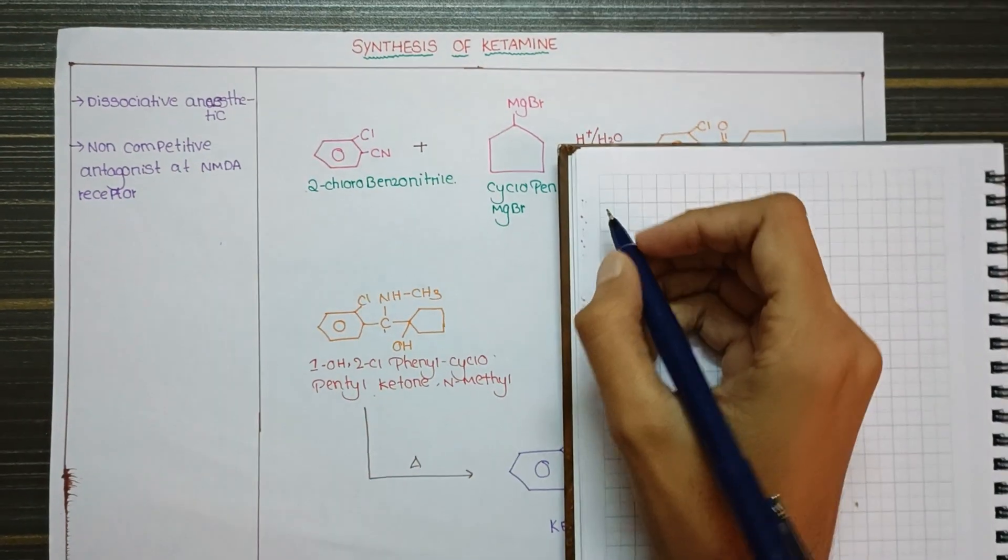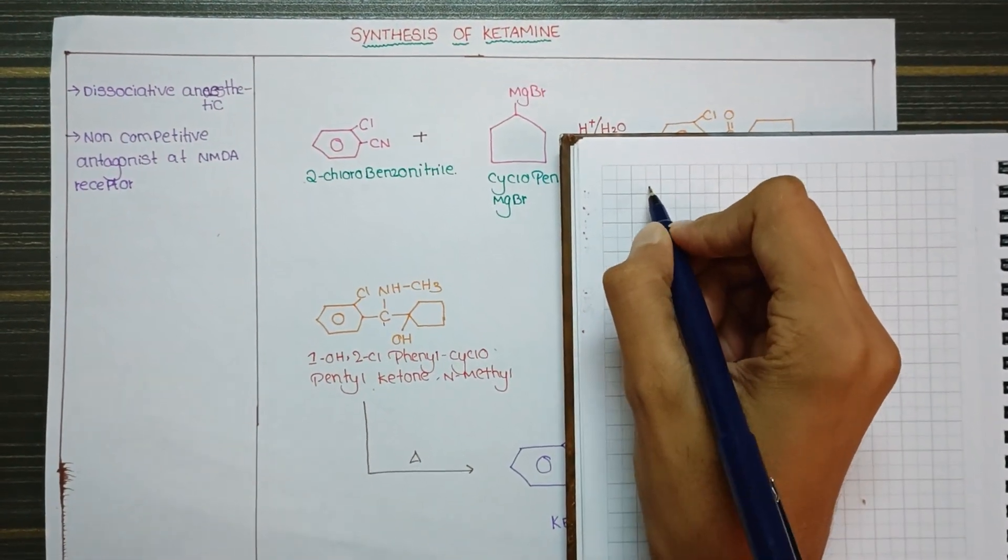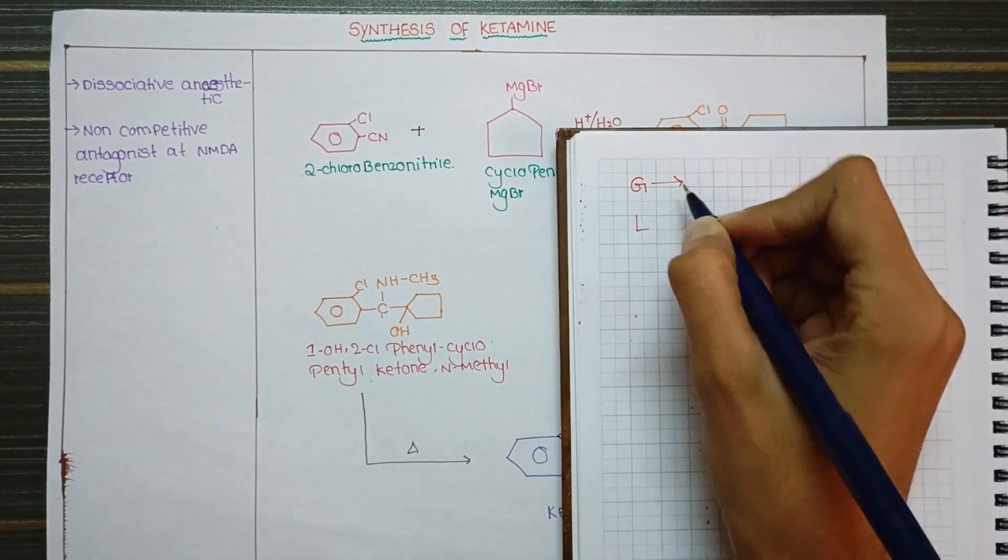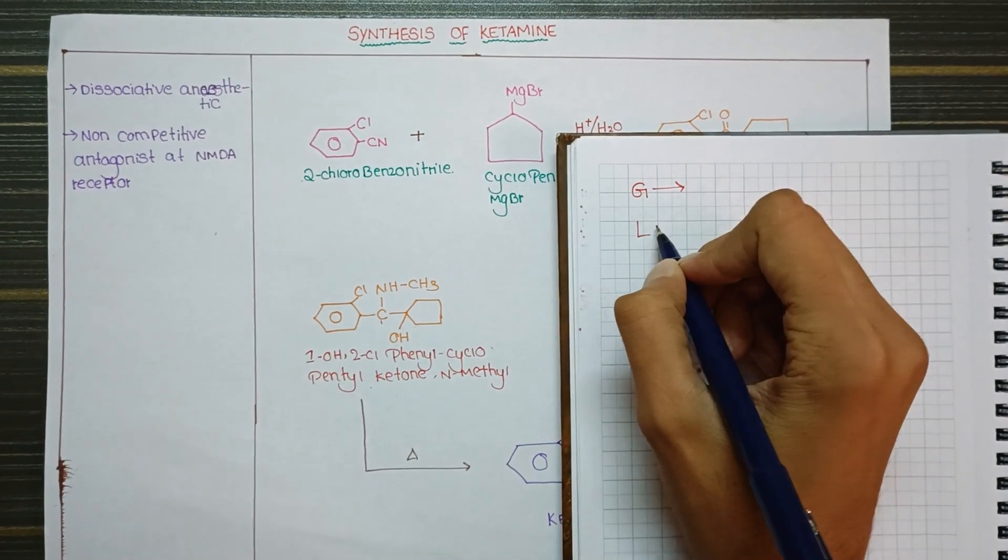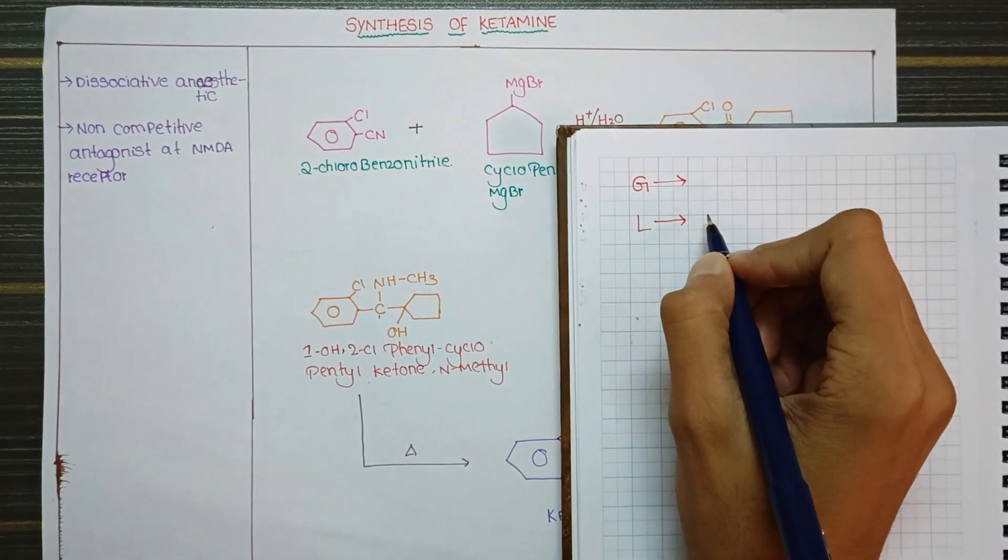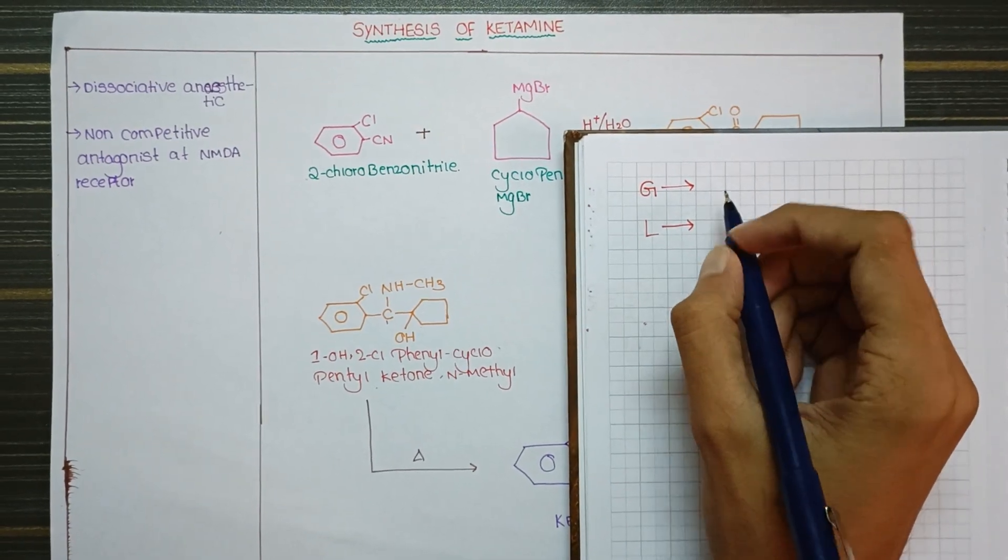We'll revise the topic very quickly. There are two types of anesthetics: general anesthetics and local anesthetics. General anesthetics affect the complete body, and local anesthetics affect only a specific part of the body.